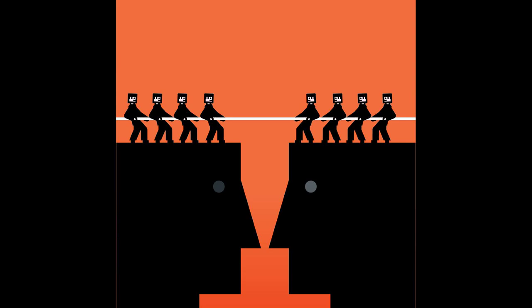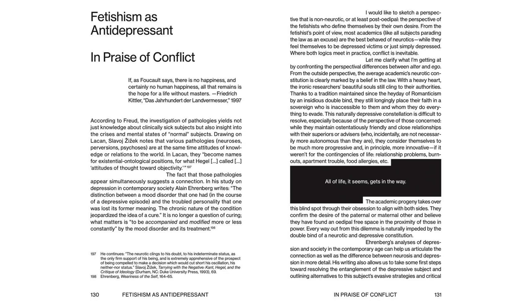International involvement: The Syrian civil war quickly attracted international attention and involvement. Regional and global powers, including Iran, Russia, Turkey and the United States, became entangled in the conflict, supporting different factions and pursuing their own strategic interests.